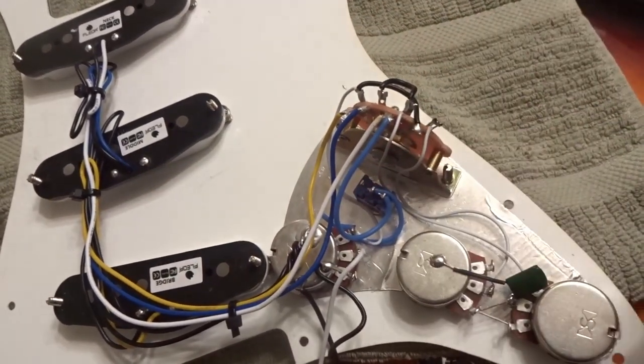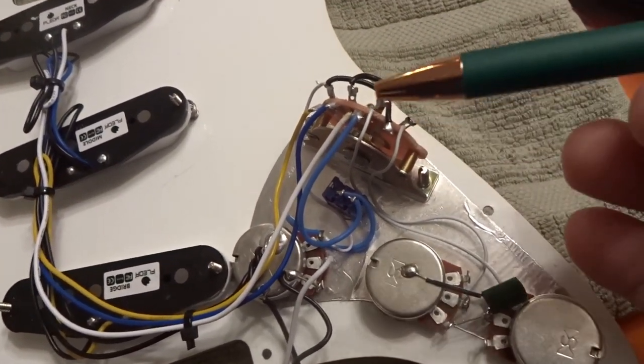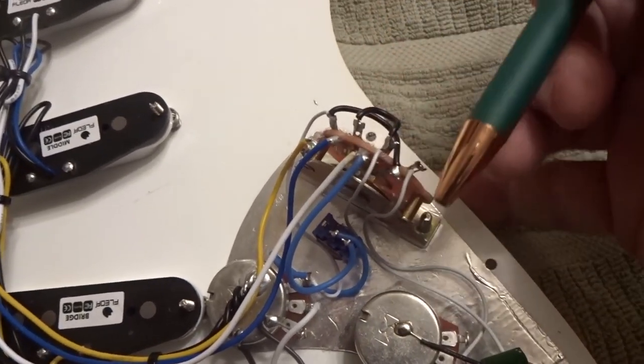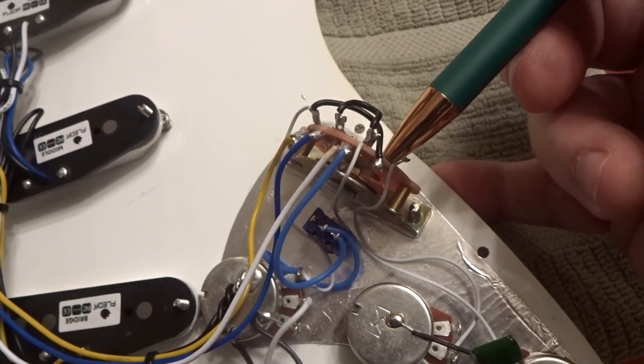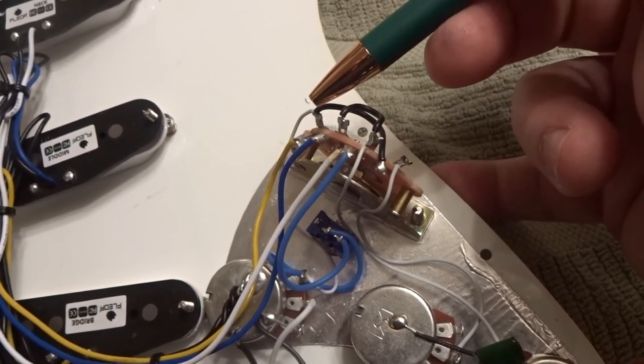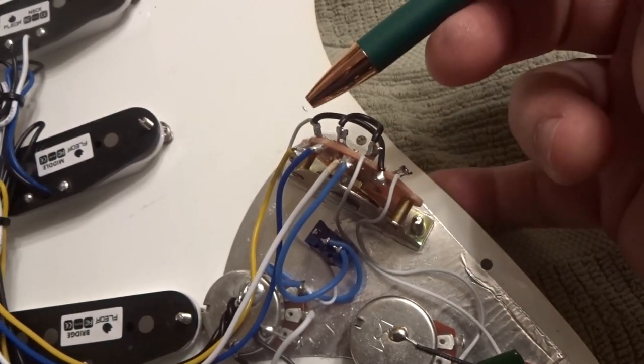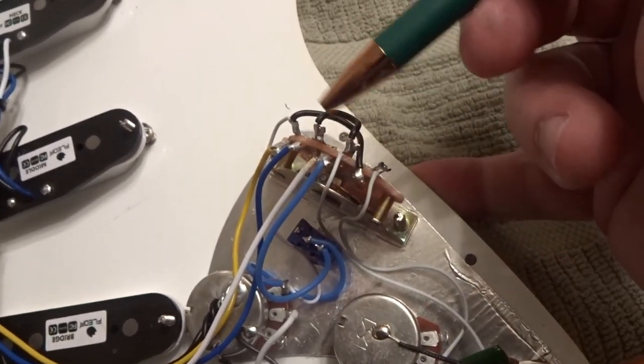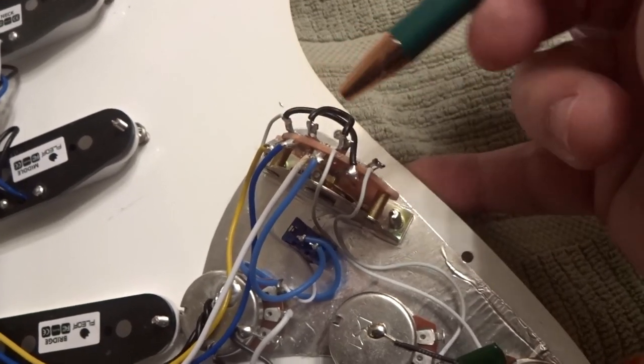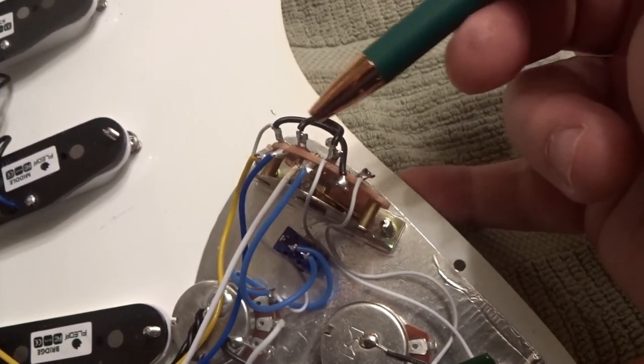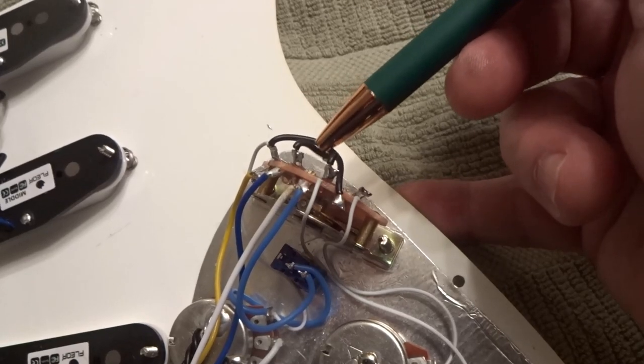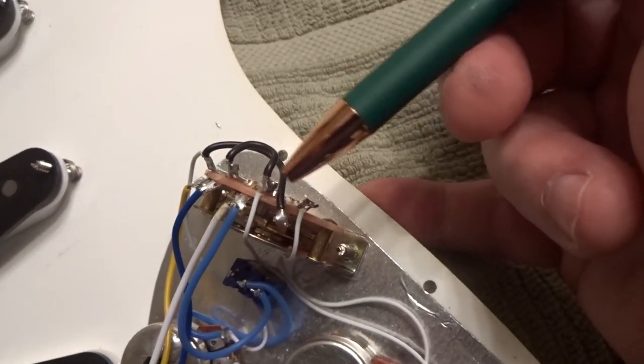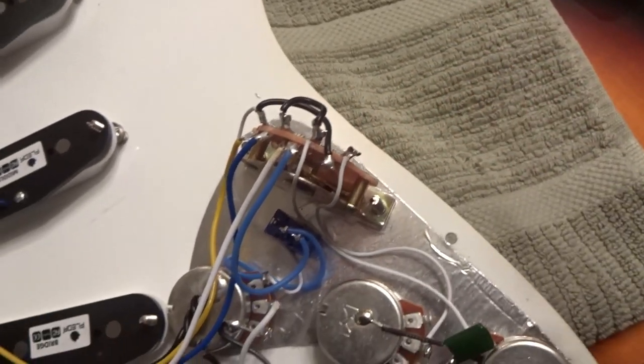So basically we already went over that part. The only thing I did do here was I didn't like the way this fourth to fifth, the common which goes to the volume pot here. I simply unsoldered it here, ran it this way and cut it shorter. And then I laid the wires back over that way and then connected the tone pots up. So now we'll test it out before we go putting everything back together.